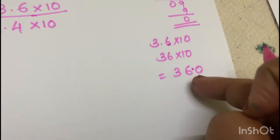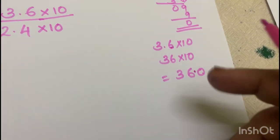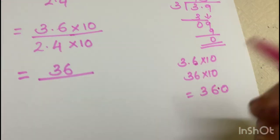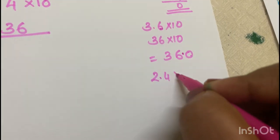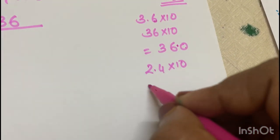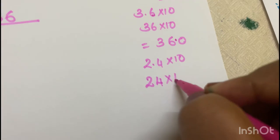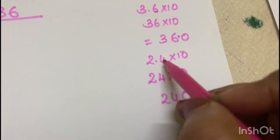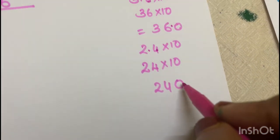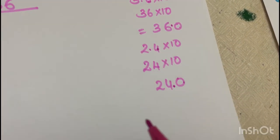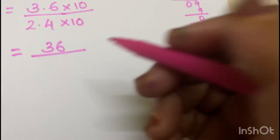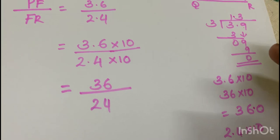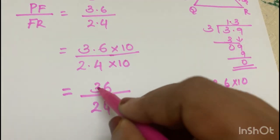The value gives us 36. Then we have 2.4 into 10, which equals 24 into 10, giving 240. Considering the decimal point — one number after the decimal point — so our answer is 24. Now we proceed with the decimal point calculation.